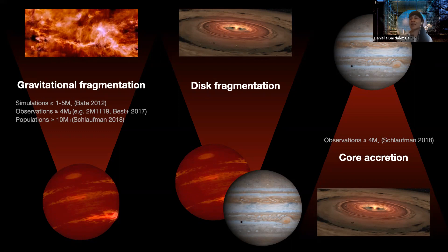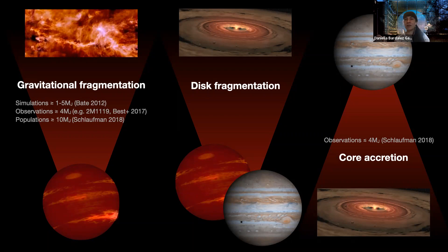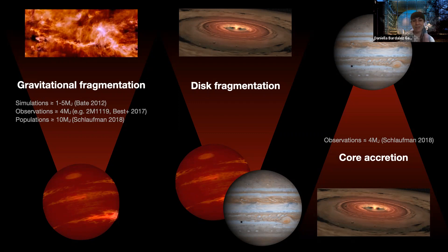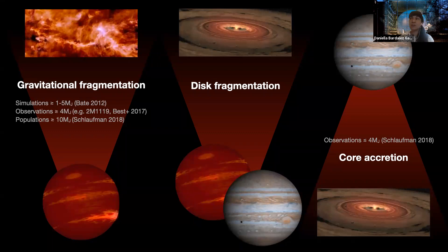There's also a study by Schlauffman 2018, where they talk about the likelihood that we find less massive objects around more metal-rich stars. They set a limit around four to ten Jupiter masses, implying that below this limit we're definitely using core accretion to form planets, and above that limit we're likely using gravitational fragmentation. So we essentially don't know at this point how brown dwarfs and giant planets form.